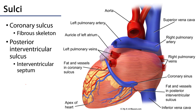Looking at the posterior aspect of the heart, we can see the coronary sinus within the coronary sulcus. We can also see the posterior interventricular sulcus, containing the posterior interventricular branch and the middle cardiac vein, along with a healthy amount of adipose tissue. Both the posterior and anterior interventricular sulci can serve as a proxy for the interventricular septum, with septal branches of the coronary arteries running deep into it to supply the myocardium.